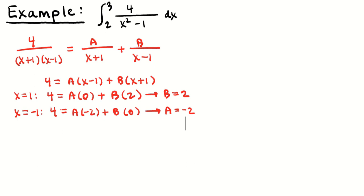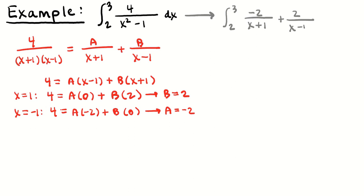There you go. So now that you've got it down to A equals negative 2 and B equals 2, we're going to rewrite this as the integral from 2 to 3 of A over x plus 1, plus B over x minus 1. Now take it the rest of the way: integrate, get an antiderivative, plug in the top bound, plug in the bottom bound, subtract, and then check your work.